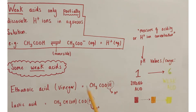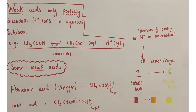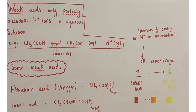Examples of weak acids include ethanoic acid or vinegar (CH3COOH), an organic acid where the end hydrogen is the one given away to form the hydrogen ion, releasing one hydrogen ion per molecule. Another is lactic acid, built up in muscles from anaerobic respiration and found in off milk — another organic carboxylic acid that donates one hydrogen ion per molecule.